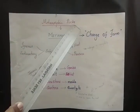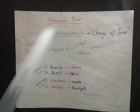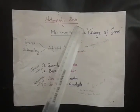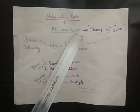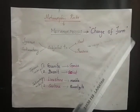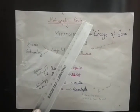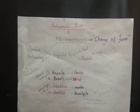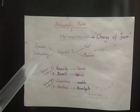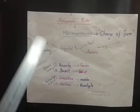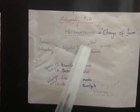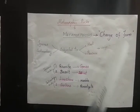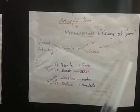Now we are going to see the third type of rock: metamorphic rocks. The term 'metamorphic' is derived from the word 'metamorphosis' which means change of form. The rocks like sedimentary and igneous rocks, when subjected to extreme heat and pressure, undergo a complete change in their character and formation.